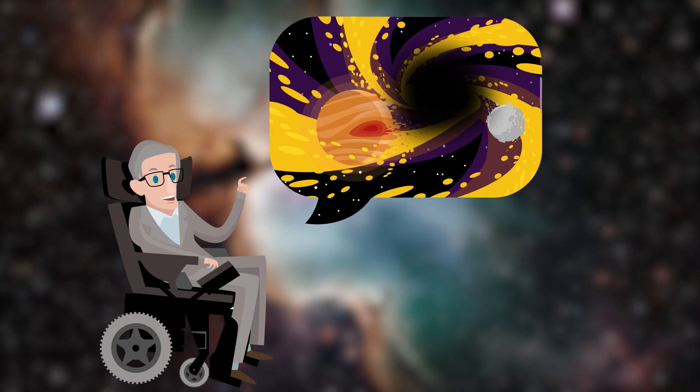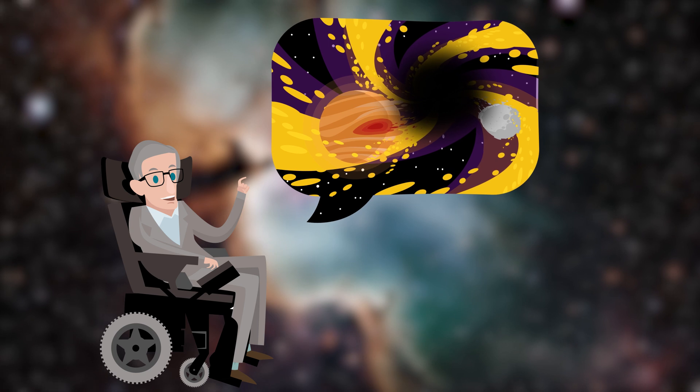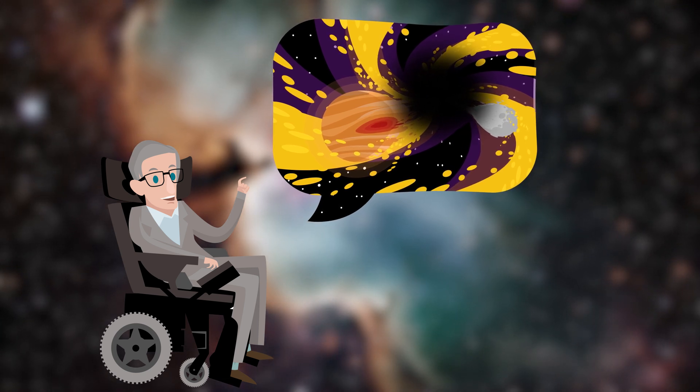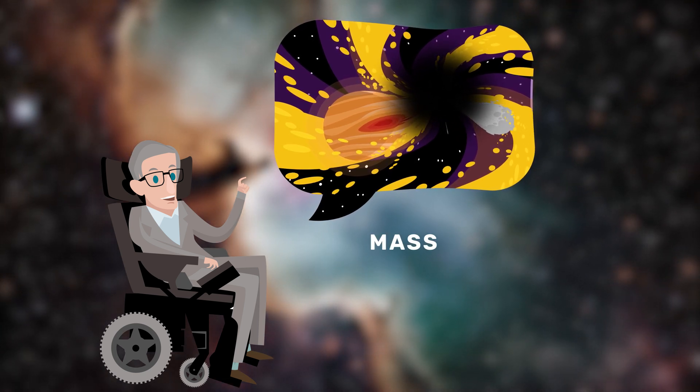In the 1970s, British physicist Stephen Hawking realised that the properties of a black hole depend on just a handful of global parameters: its mass, electric charge, and angular momentum. But that was not all.